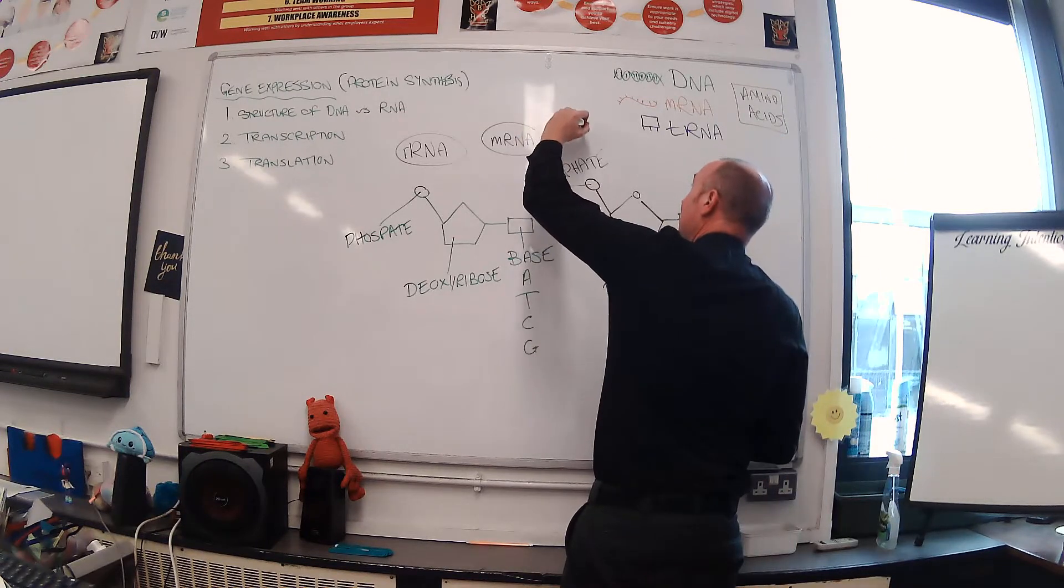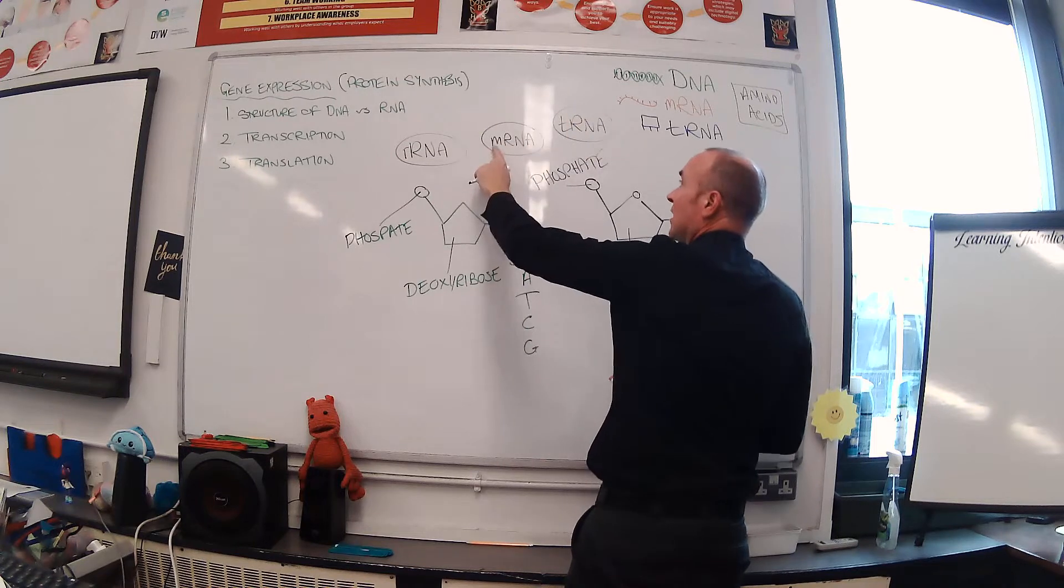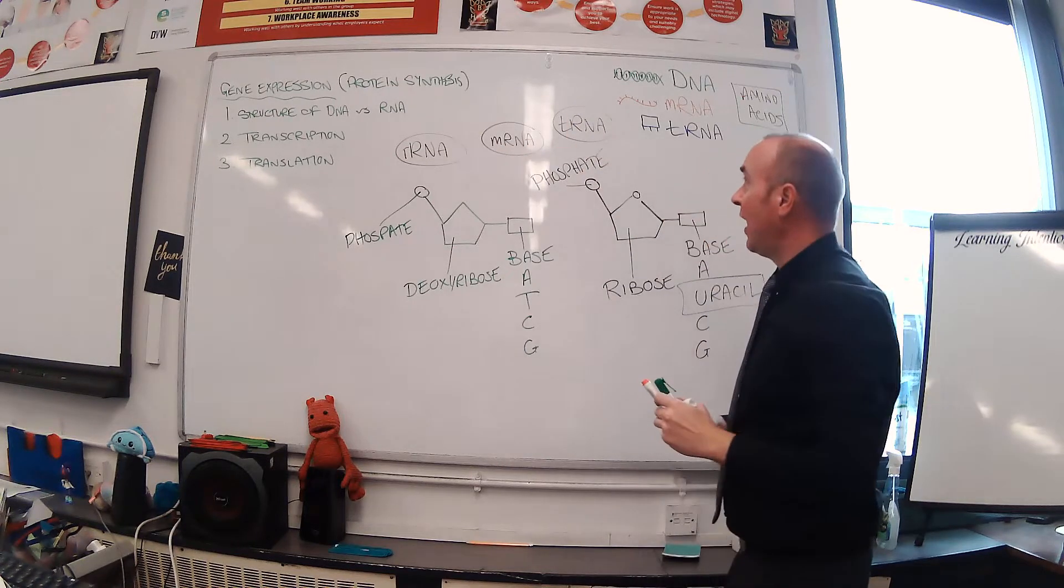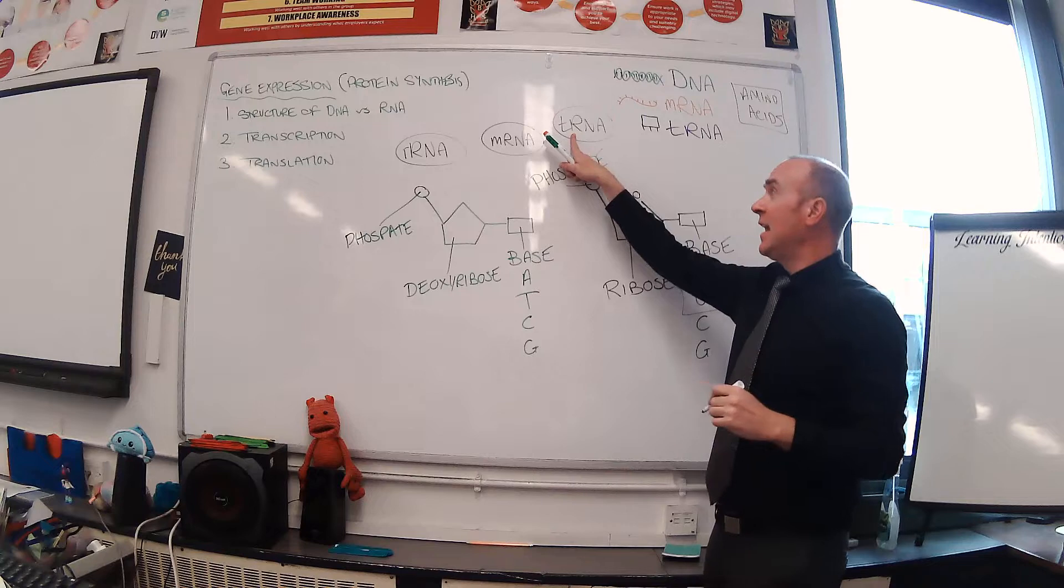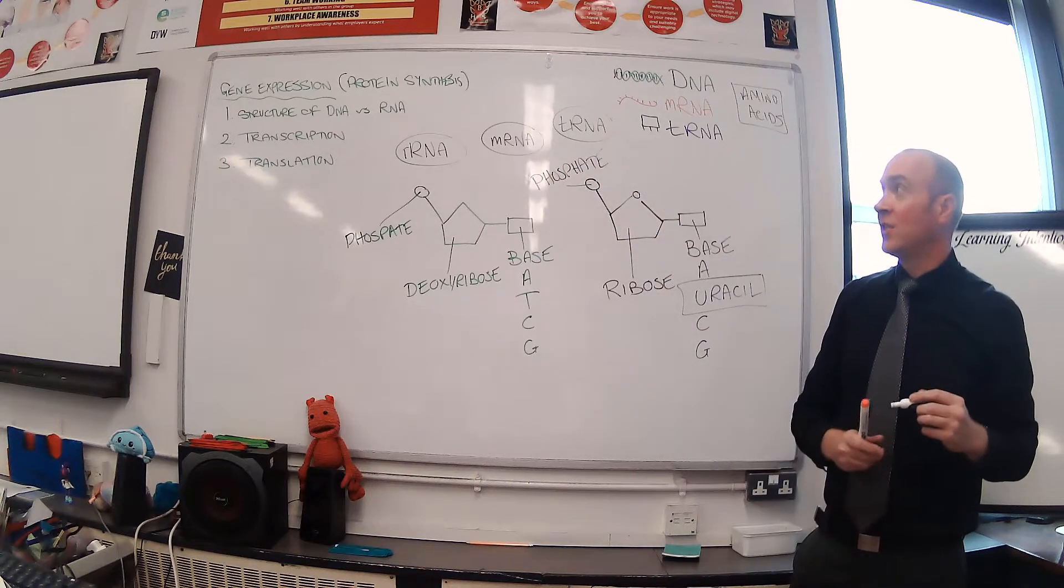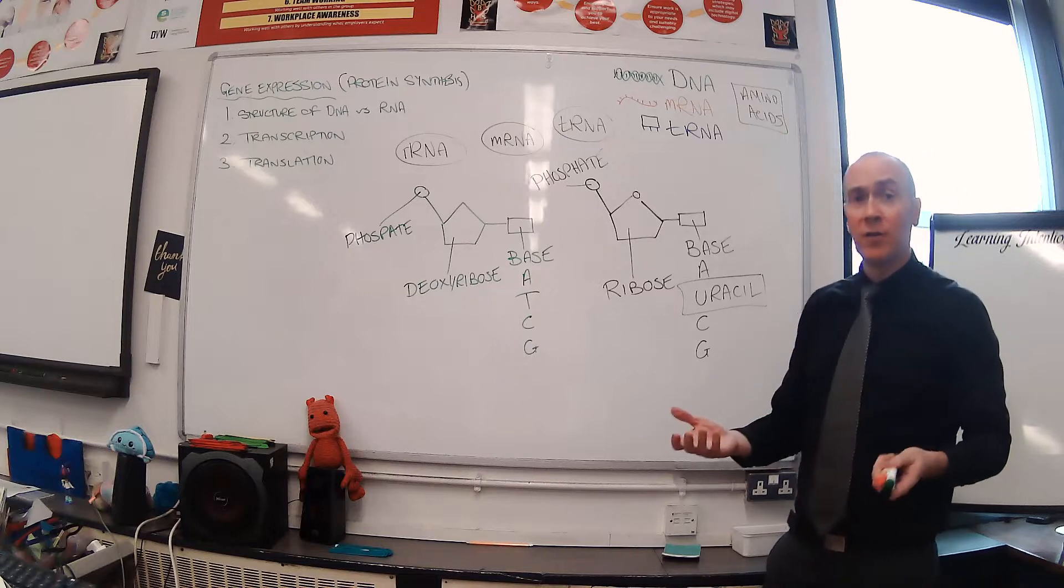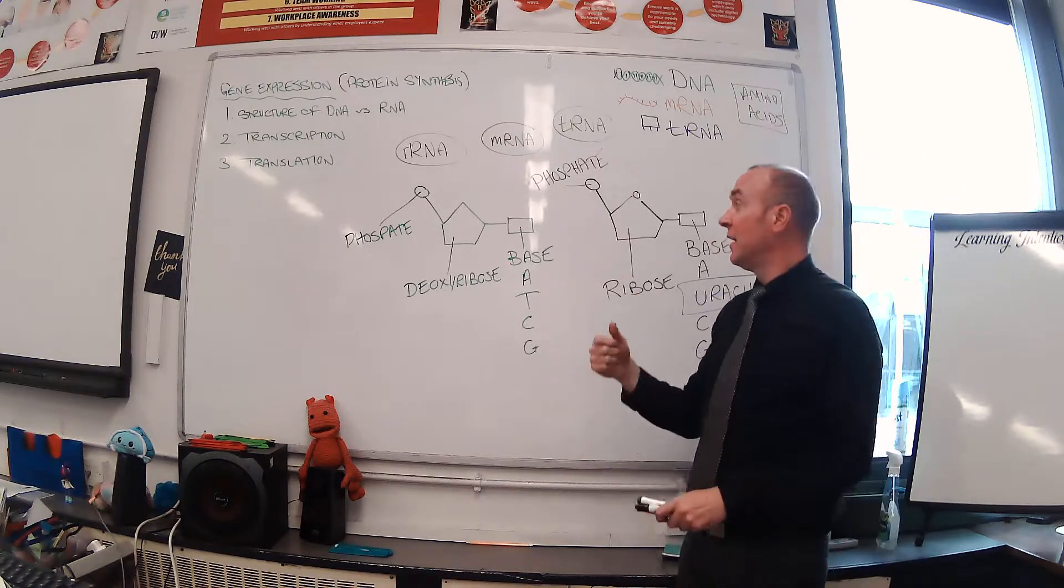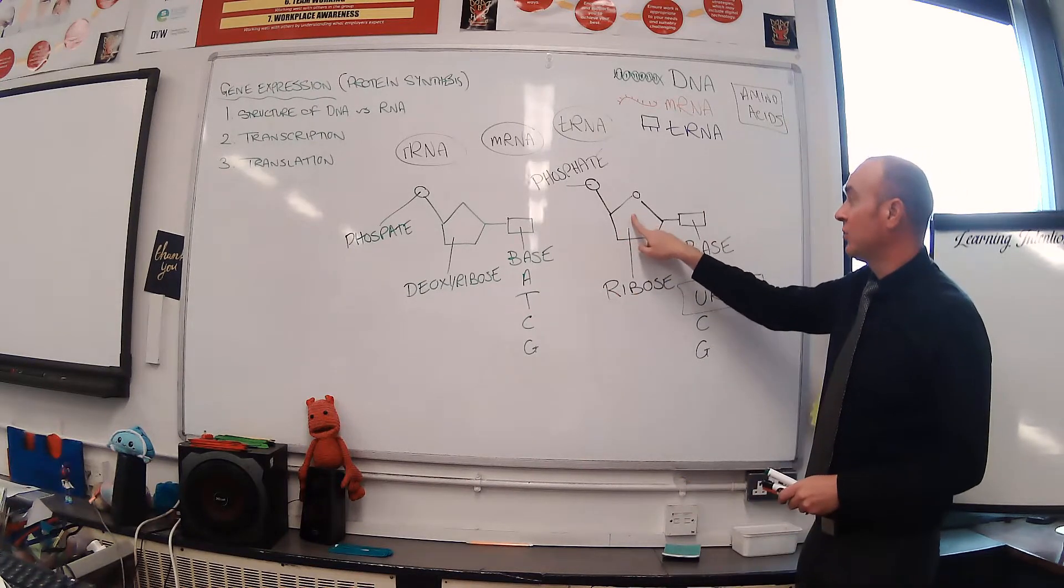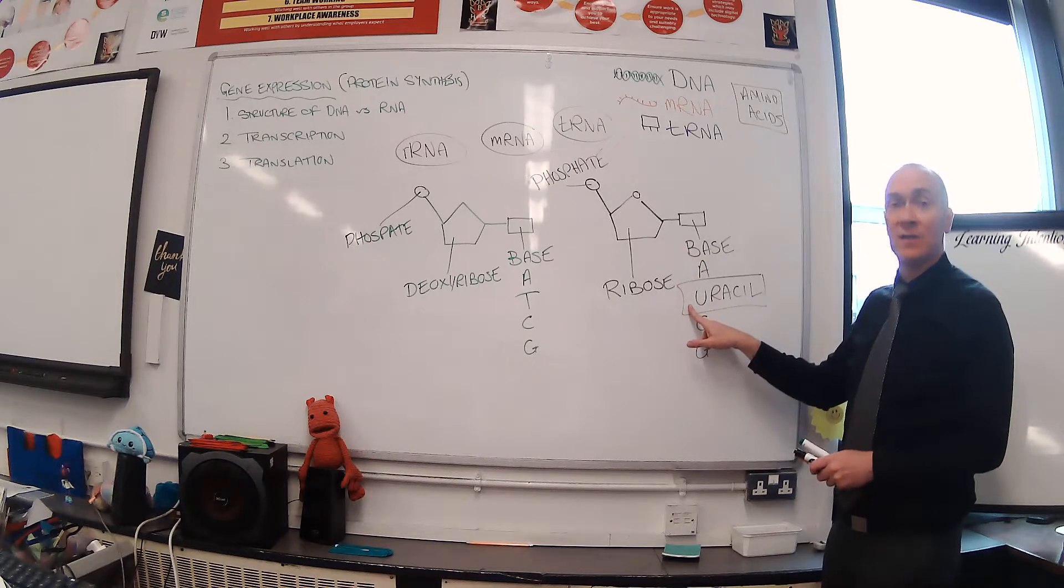We also have mRNA which brings the signal from the nucleus out into the cytoplasm to the ribosomes, and then we have tRNA. The m stands for messenger, the t stands for transfer. There are three different types of RNA, but they all follow the basic rules: they're single stranded, they have ribose instead of deoxyribose, and they have uracil instead of thymine.